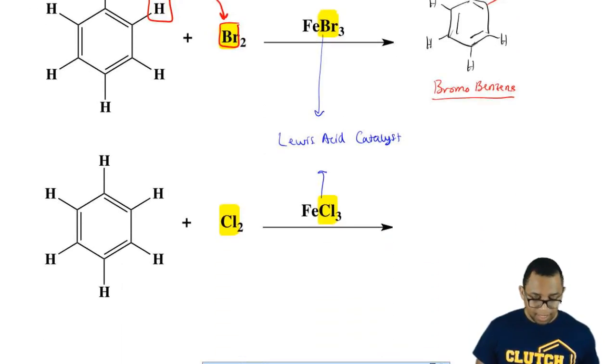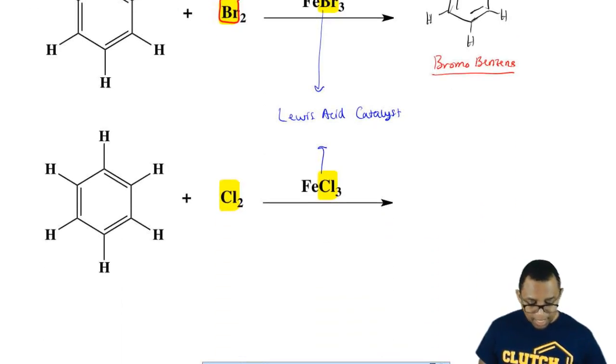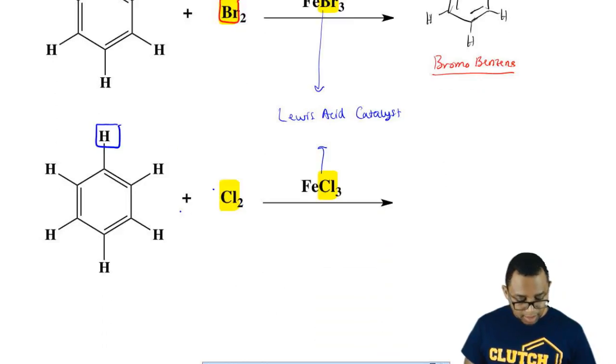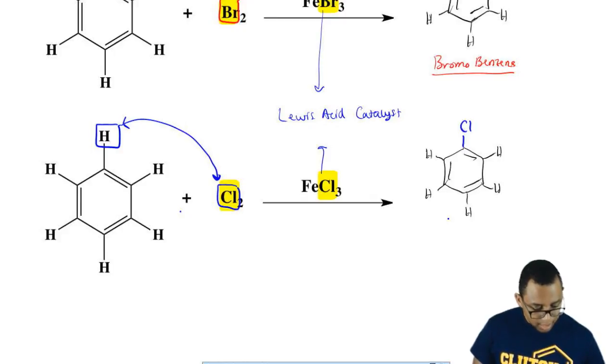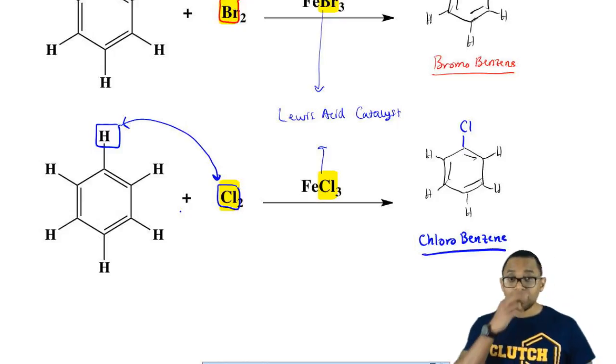Here if we did Cl, it'd be the same exact thing and it could be any hydrogen anywhere on benzene that I'm switching with the Cl. So I decided to do the top one, but I could have done it anywhere. And there goes the Cl up here. And what did I make here? I made chlorobenzene.